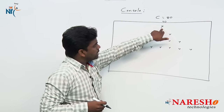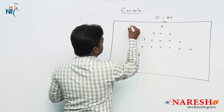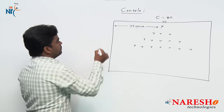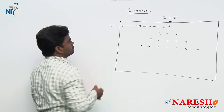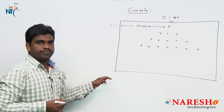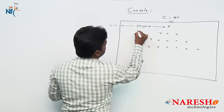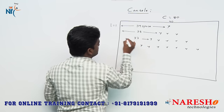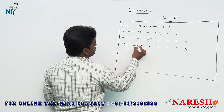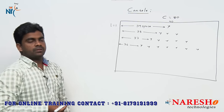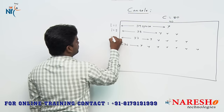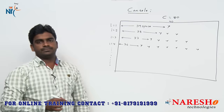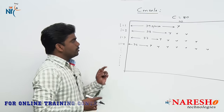If we want to print this star, we need to print 39 spaces first. When i equals 1, representing the number of rows, we print 39 spaces. When i equals 2, we print 38 spaces. Then 37 spaces, then 36 spaces. The i value increases — i equals 2, i equals 3, i equals 4 — depending on the specified number of rows.